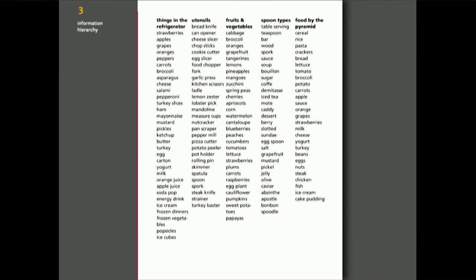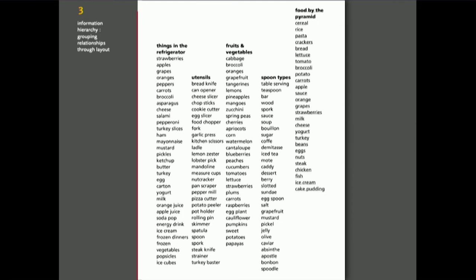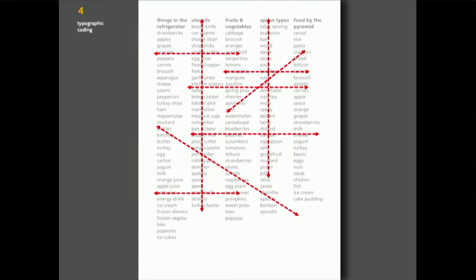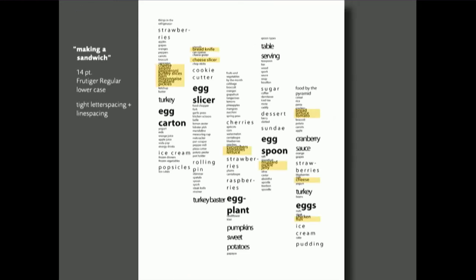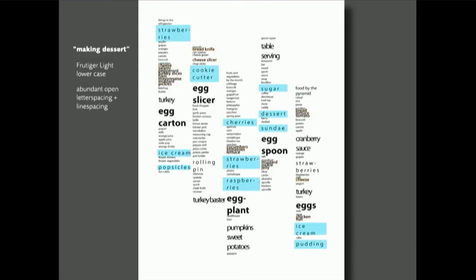We have them produce an information hierarchy study. We give them a five-column grid to work with in the next phases. We ask them, without rearranging the words, can you show relationships with the groups just by layout and positioning — commonality and those that are not connected? Then we challenge them further: can you show connections, again without moving words, and just utilize the fonts of the typeface and begin typographic coding? For instance, everything in yellow is making a sandwich — 14-point regular type, lowercase, tight letter spacing, line spacing — making dessert.